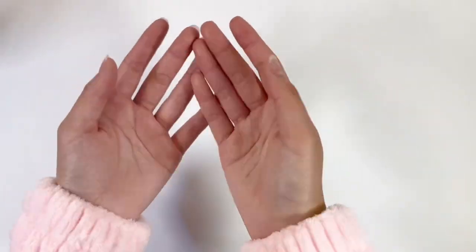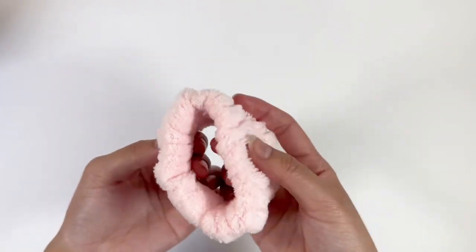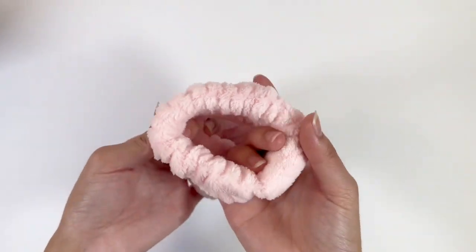The wristband is made out of coral fleece, which is soft and skin friendly. It allows you to cleanse your skin comfortably. It has good elasticity and stretch to wrap around your wrist, making it suitable for most people.